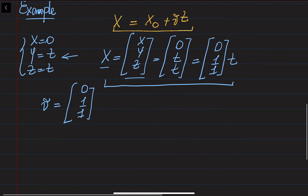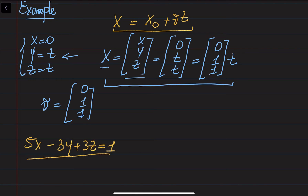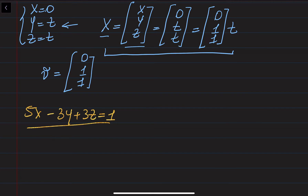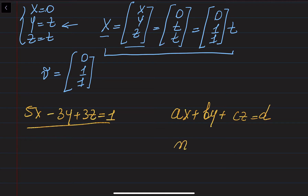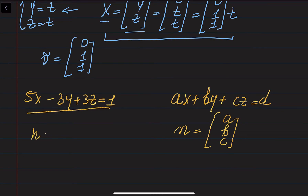We are also given the plane 5x − 3y + 3z = 1. This is the general equation of a plane. The normal vector is found from the coefficients of x, y, and z. In general, for ax + by + cz = d, the normal vector is (a, b, c). So here the normal vector is n = (5, −3, 3).